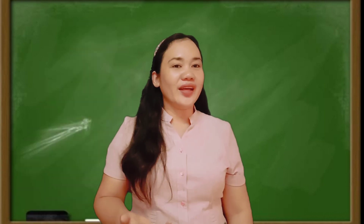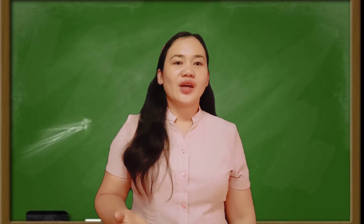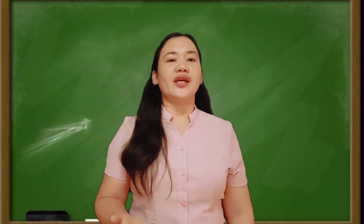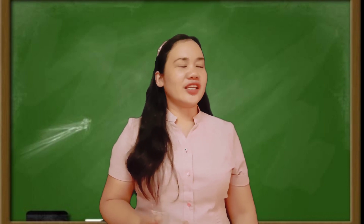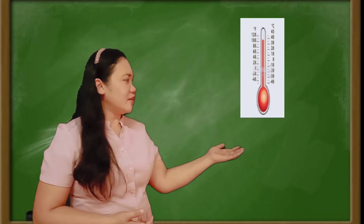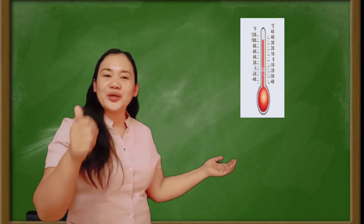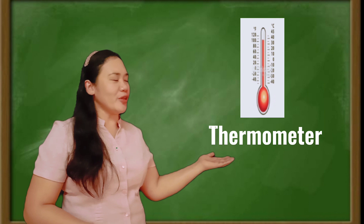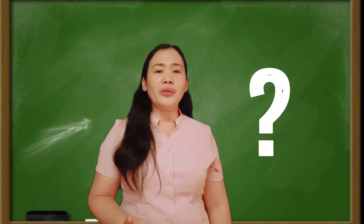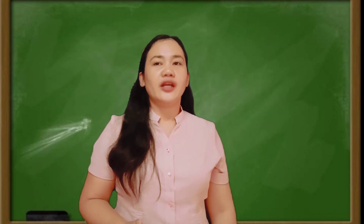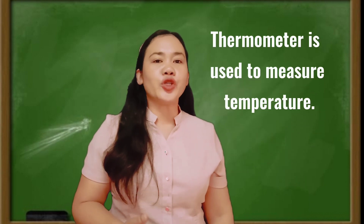Children, let's name some weather instruments and what weather components they measure. Let's see this picture. Do you know what instrument this is? Very good! This is a thermometer. So what is the use of the thermometer? You are correct — thermometer is used to measure temperature.